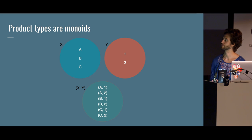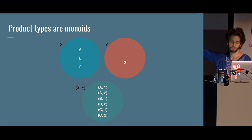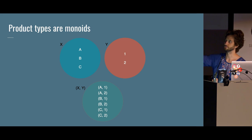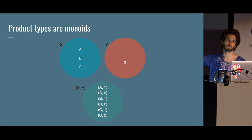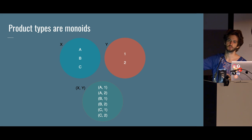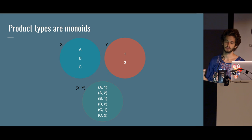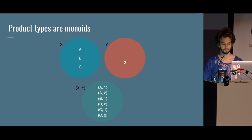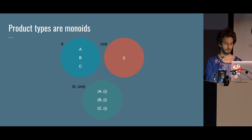If you think of the inhabitants of a type — all unique elements it can have — then a product of two types is the Cartesian product of their inhabitants. Type X has three inhabitants A, B, C; type Y has two inhabitants 1, 2; so Tuple(X, Y) has six inhabitants: A1, A2, B1, B2, C1, C2. The cardinality of the product is 3 times 2 equals 6. So product types are monoids. Unit has cardinality one, so Tuple(X, Unit) is isomorphic to X.